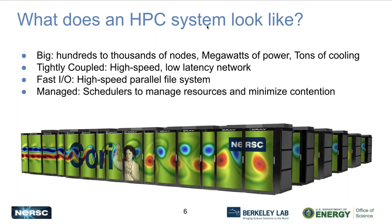Unlike a workstation, they may be built from commodity parts, but you're coupling them together in specialized ways. One thing is through the network — they typically have a high-speed, low-latency network so that the different processors can talk to each other quickly and exchange information, which allows you to tackle larger problems. They often have fast I/O systems — typically high-speed parallel file systems. We'll hear about CEPH in a bit as an example of one such file system. They're also managed with schedulers to control how jobs are run and avoid saturating one processor while others sit idle.